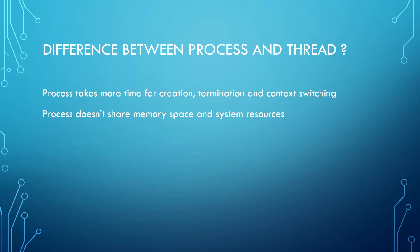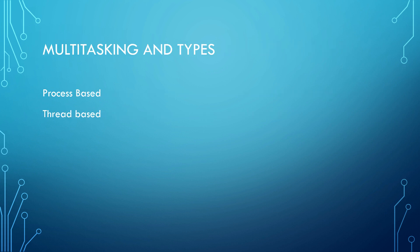What's the difference between a process and a thread? A process is very heavyweight while a thread is lightweight. A process can be called as a bigger program which is in execution, and a thread can be called as the part of that bigger program which is in execution. Since processes are huge, they take more time for creation, termination, as well as context switching. Also, processes don't share resources — they have their own memory space and their own system resources — while multiple threads, being part of the same process, can share the same memory space.